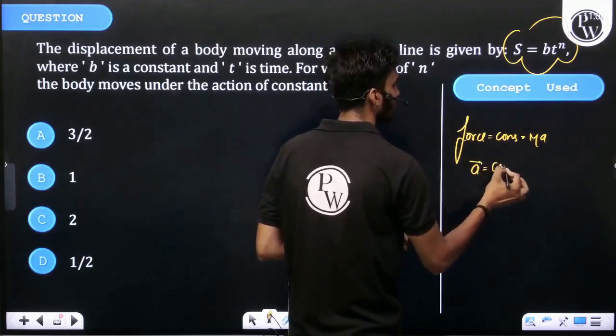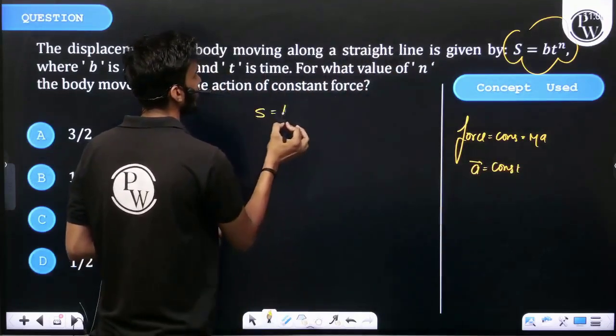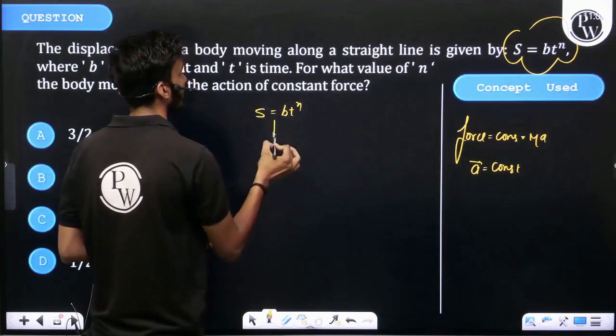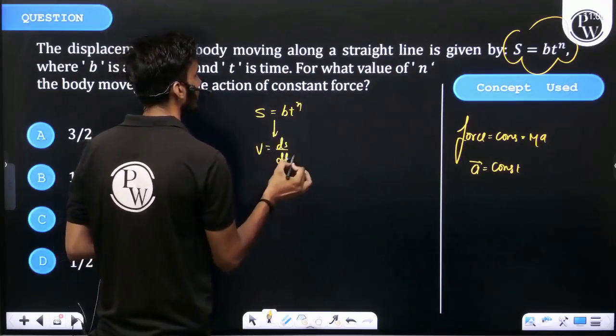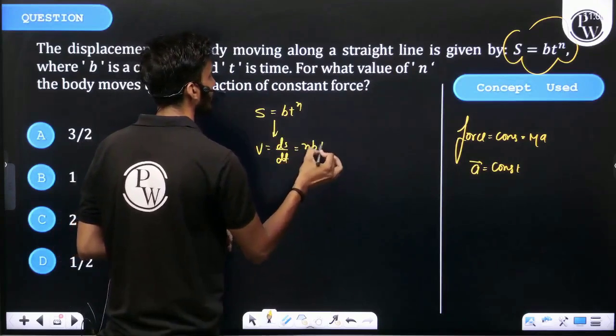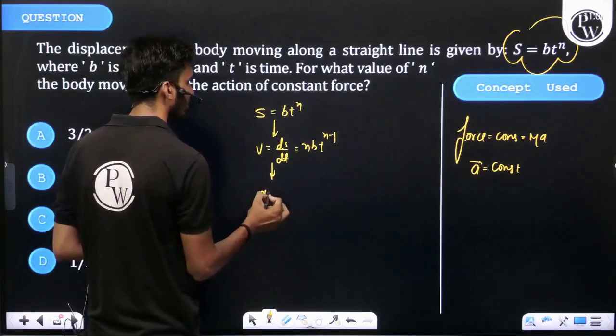Okay, displacement is equal to bt^n. Differentiate: velocity equals dS/dt, which equals n·b·t^(n-1). Again differentiate: acceleration equals dv/dt.